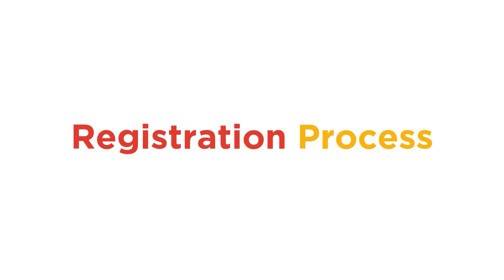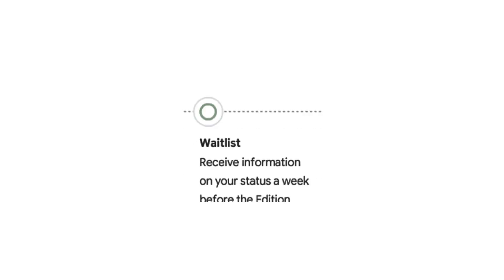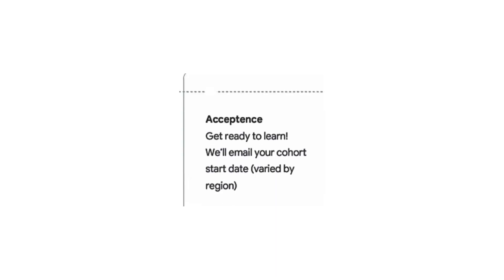Once you apply for the program, if you get selected, you will be allotted to one of the batches and your training will begin. To register, visit the official Google Cloud Innovator Program website — the link is in the description. After submitting your application, you'll be added to a waitlist. If selected, you'll receive a verification email. Once fully registered, the 10-week training session begins, after which you must pass six exams to receive your Google certificate.